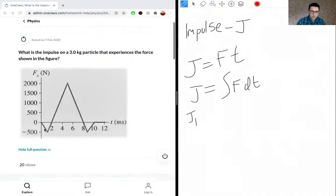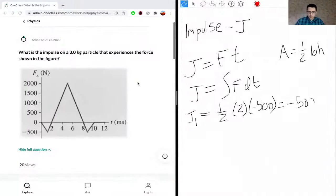J1 is this one, J2 is this one, and J3 is this one. This equals one-half base times height for the area of a triangle. The base here is 2 units. The height is negative 500. This gives us negative 500. We should pay attention to the units. This is in newtons and milliseconds, so this is Newton-milliseconds.